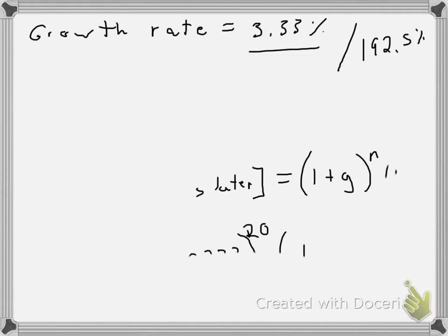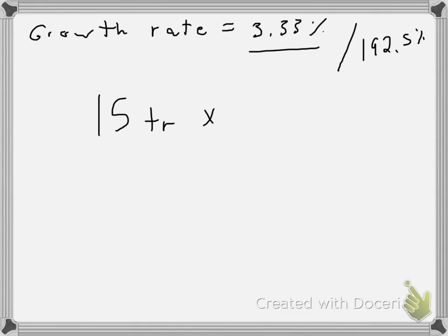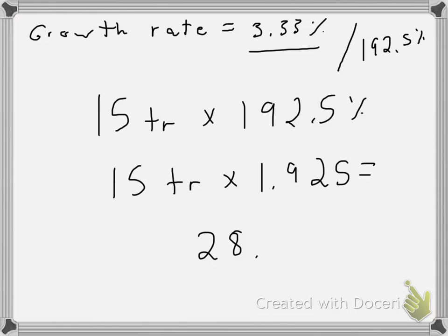We're going to use that to figure out what our GDP would be if we had $15 trillion. So $15 trillion times 192.5%, which is actually $15 trillion times 1.925, would equal out to be $28.875 trillion.